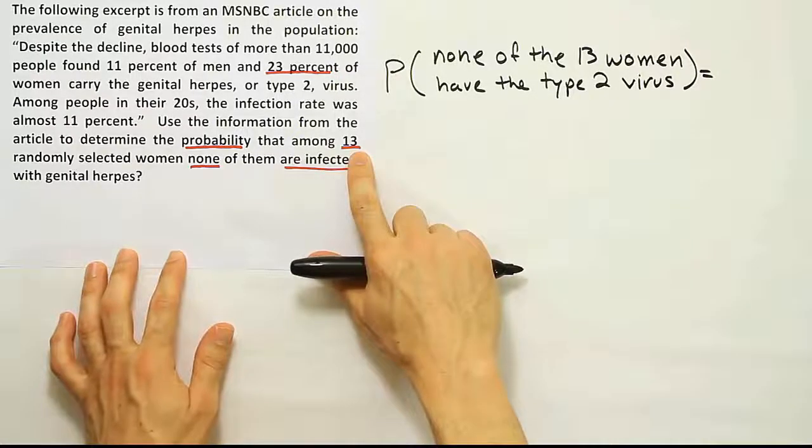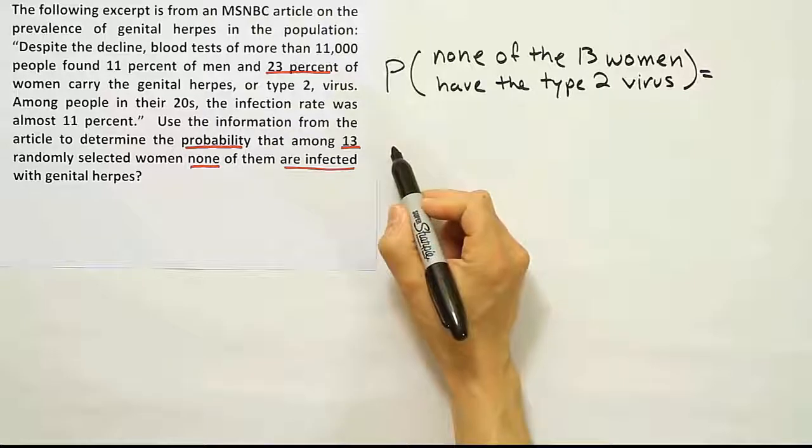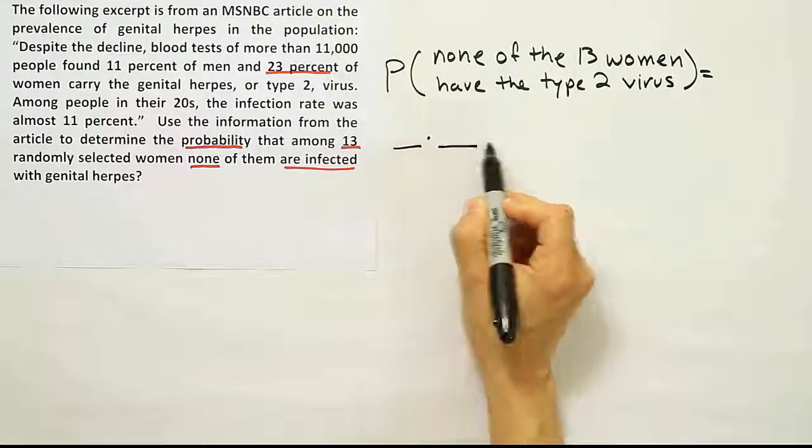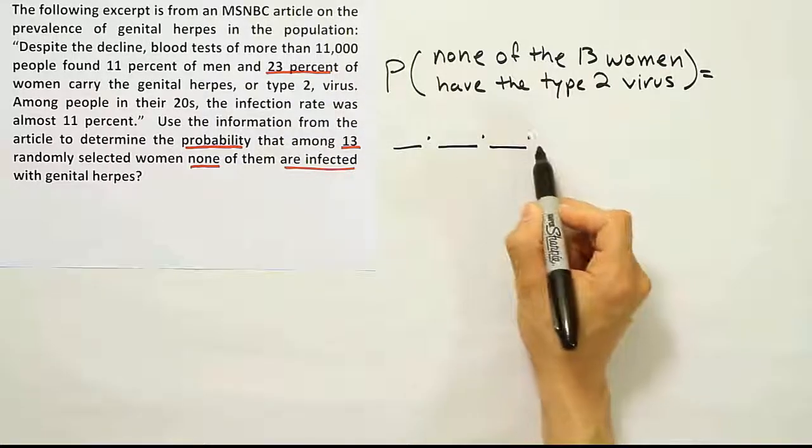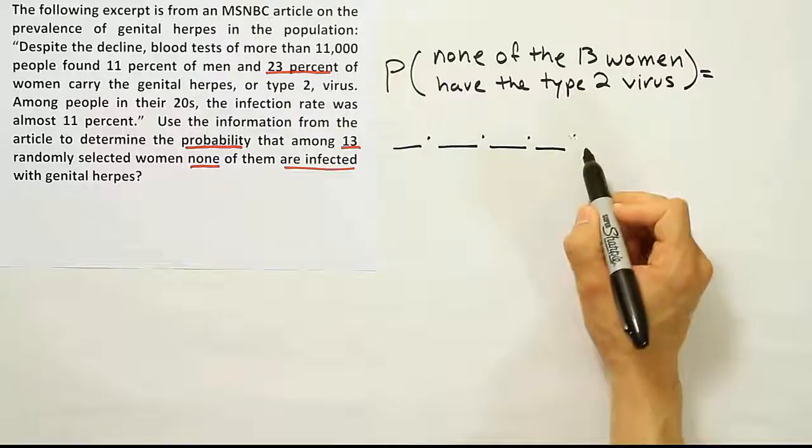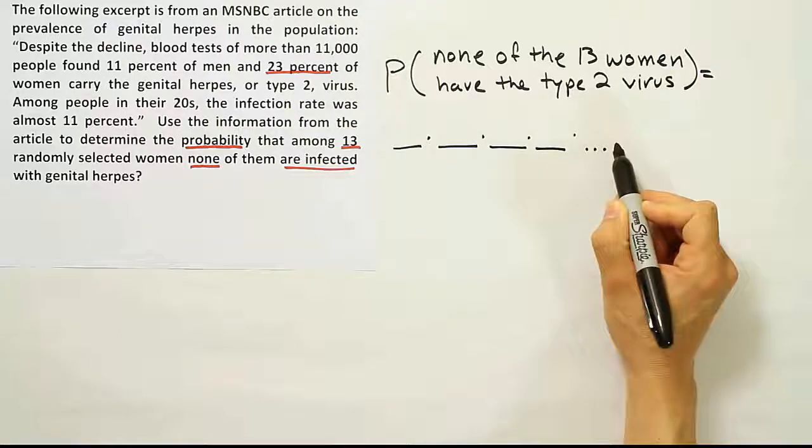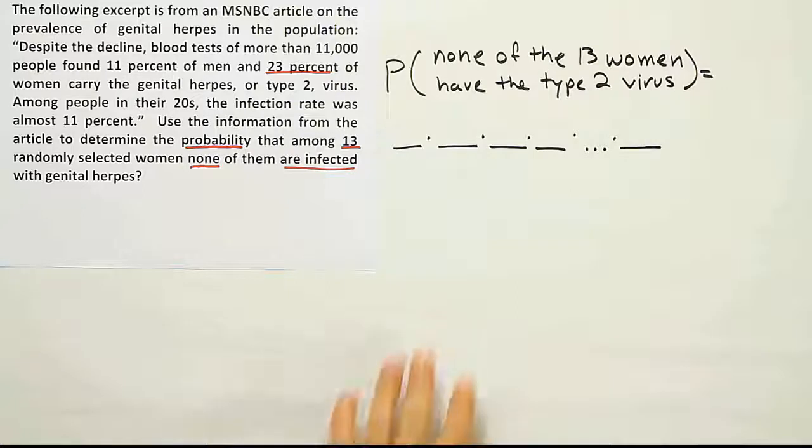Whenever I see that I have 13 things selected, I need to draw 13 probability spaces to hold the probabilities for each individual event. Well, I'm not going to actually write out 13 spaces, so I'm going to do a little dot dot dot here and then kind of end.